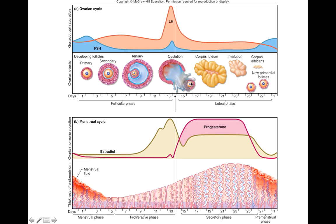Now this oocyte is going to head down the fallopian tube toward potential fertilization. We're not done with the follicle yet — it will turn into the corpus luteum. The corpus luteum is like a little miniature endocrine gland, responsible for the production of estrogen and progesterone. You can see in the graph below that progesterone and estradiol increase when the corpus luteum is formed.